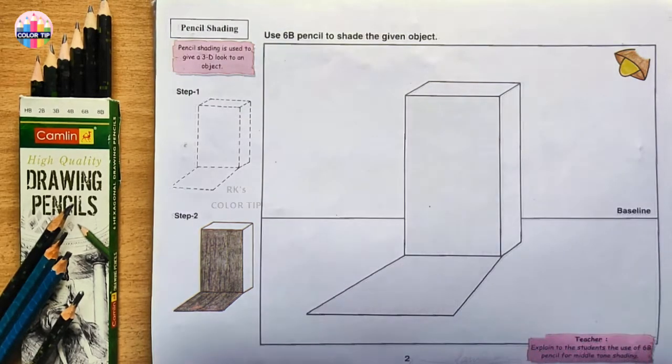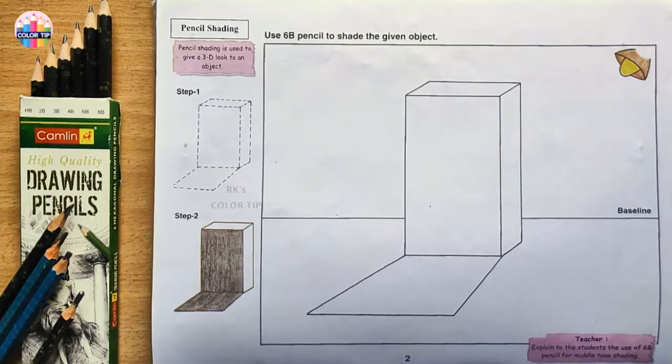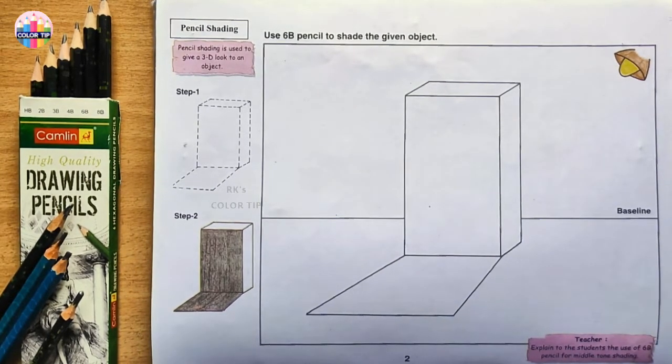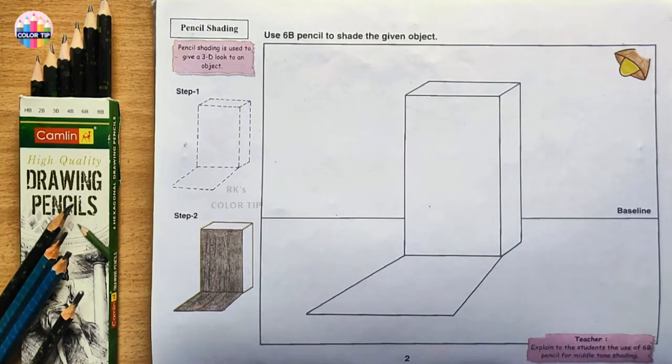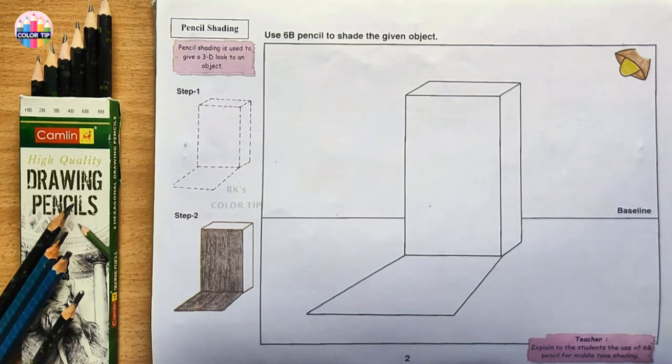Step by step level 4, lesson number 2: Pencil Shading. Use 6B pencil to shade the given object. Do you know generally why do we shade objects? It's a simple thing. Shading is used to give a 3D look to any object. It can be a pencil shade or it can be a color shade.